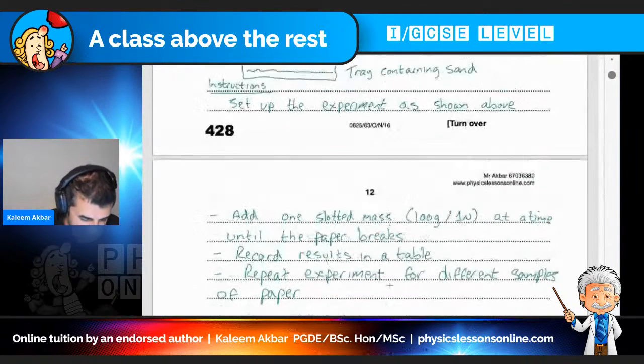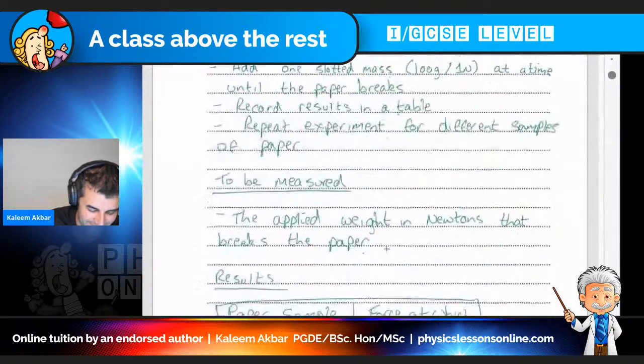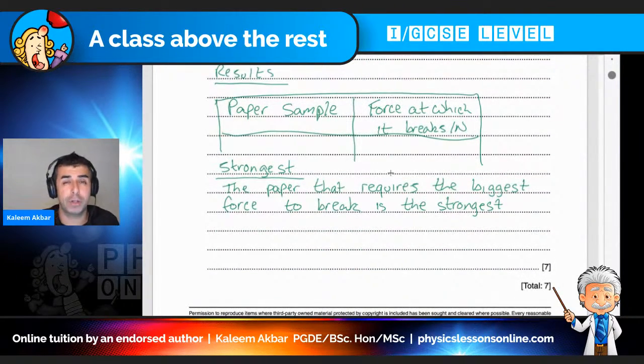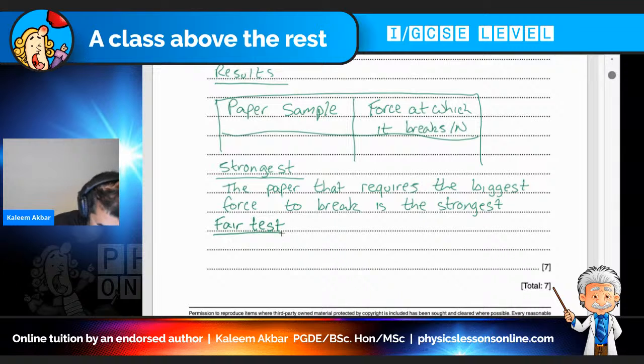And then the last one says the variables you will keep the same to ensure the comparison is a fair test. So, guys, what are you trying to measure? You're trying to measure paper breaking. Now, what must you keep the same for all of those? With practice, this will become self-explanatory. So fair test. How am I going to keep it fair? Notice again how I'm doing a little subheading for my own piece of mind. Same width of paper and thickness of paper.